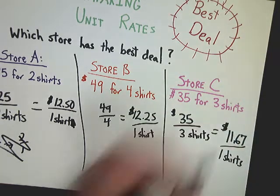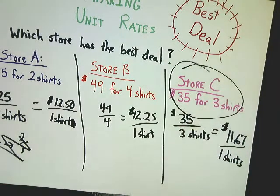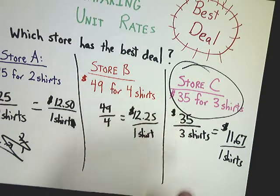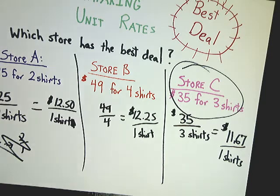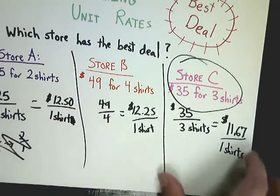So essentially, my best deal is at store C because it's only 11 and two-thirds dollars to buy a shirt. So if you can get that deal per shirt, the per shirt best deal would be store C. Now if you have to buy them in the group, that whole logic changes, but we're going to assume that you don't have to do that.